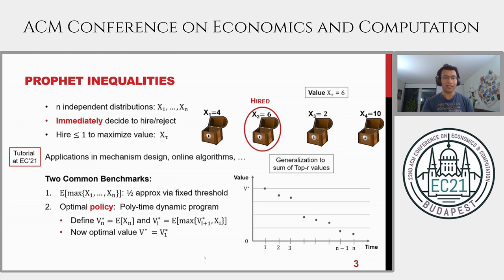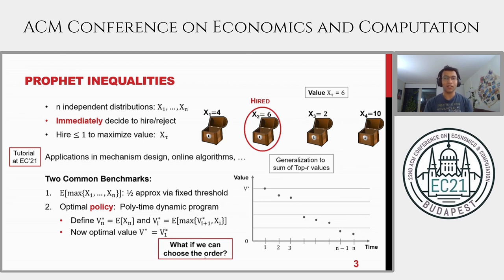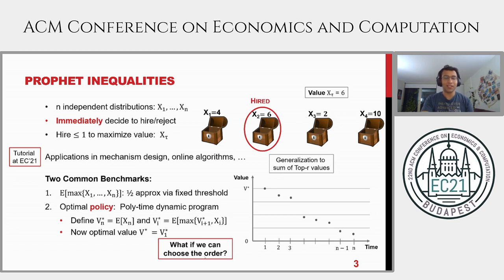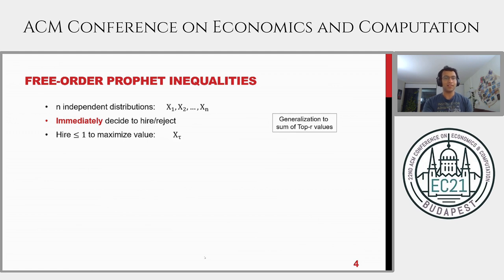In today's talk we are interested in variants of this second benchmark. In particular, we consider the question: what if the order of the boxes is not a priori fixed? What if the algorithm can choose to interview candidate three first, then one, five, seven, and so on? This is also known as the free-order prophet inequality problem, where the labels one to n have no significance — you can interview them in any order, but must still immediately decide whether to hire each candidate.